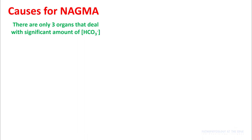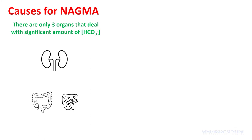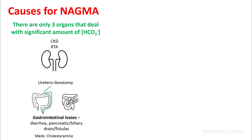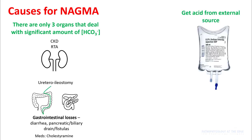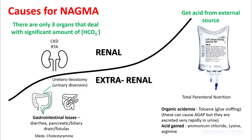There are only three organs that deal with significant amounts of bicarb: your kidneys, gut, and hepatobiliary system — and that's where most of the differentials come from. The other thing that can cause metabolic acidosis is getting acid from an external source. The commonest among them is normal saline. Other sources include toluene toxicity as seen in glue sniffing, ingestion of ammonium chloride, and amino acids like lysine and arginine, which are metabolized into acids and can cause non-anion gap acidosis if taken in large amounts.